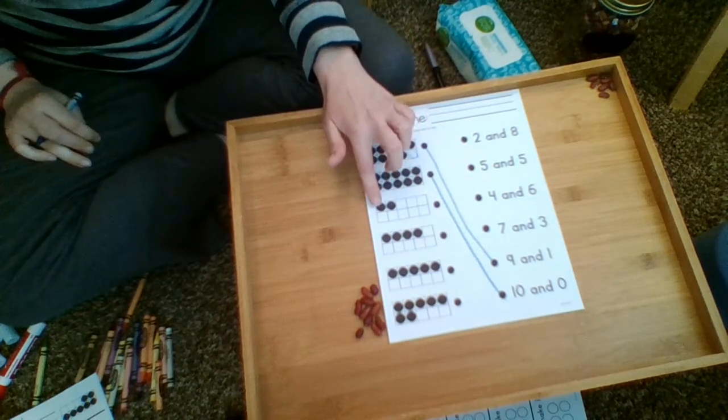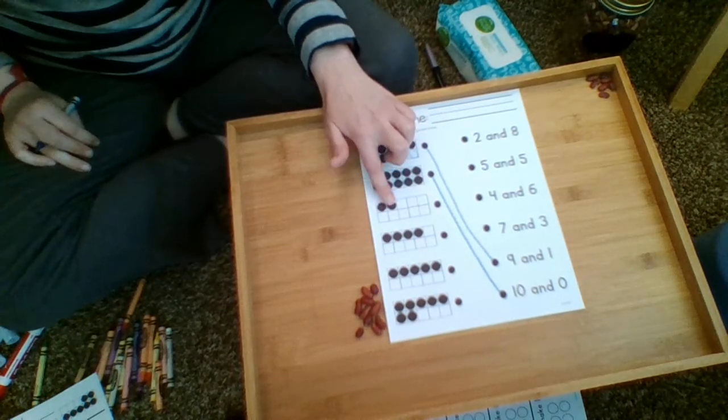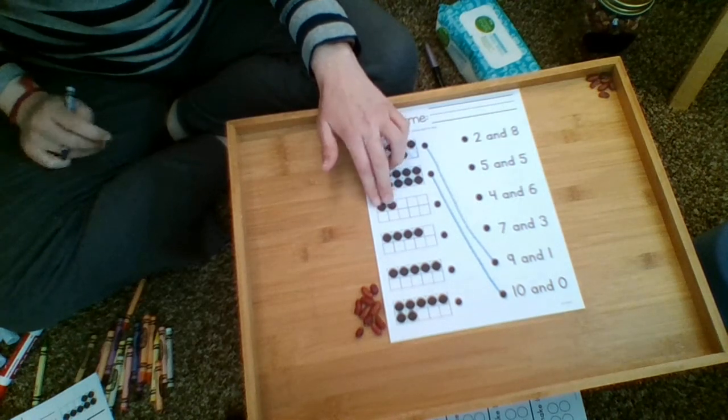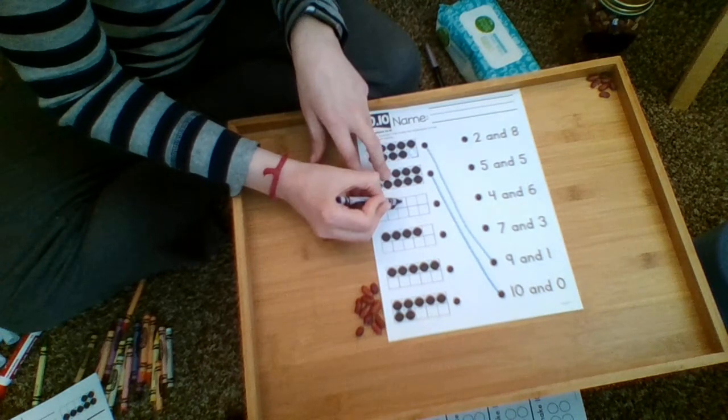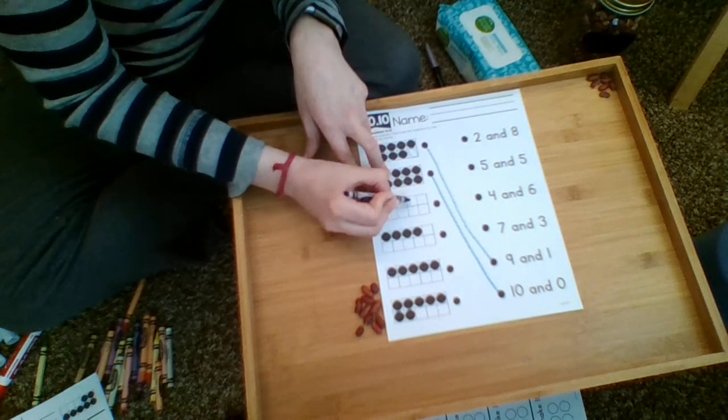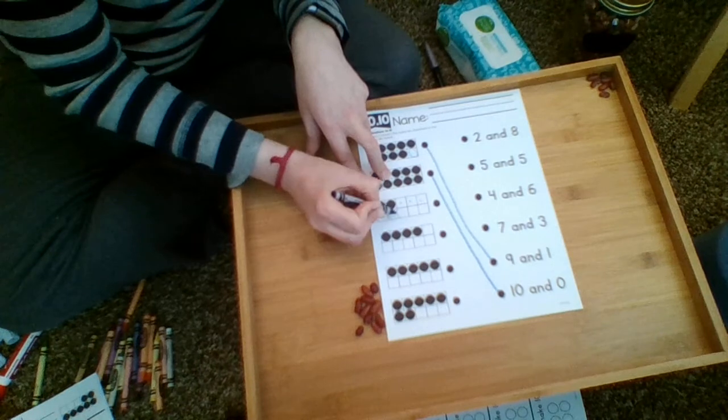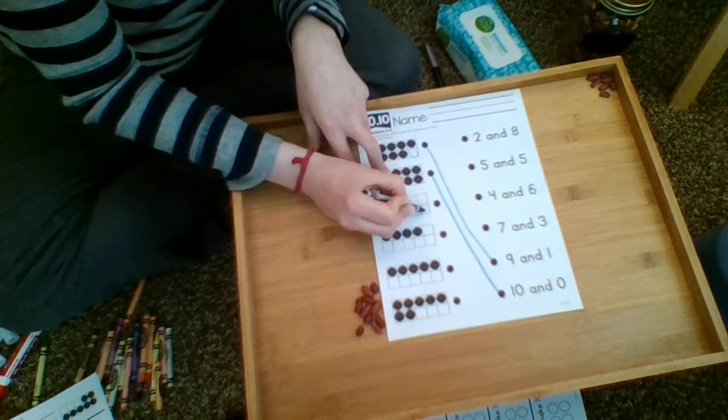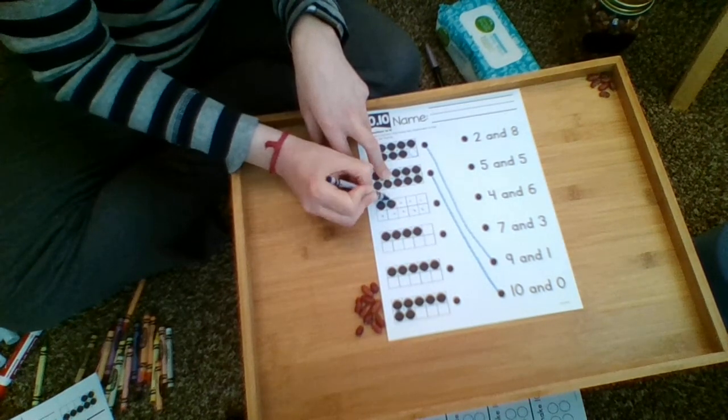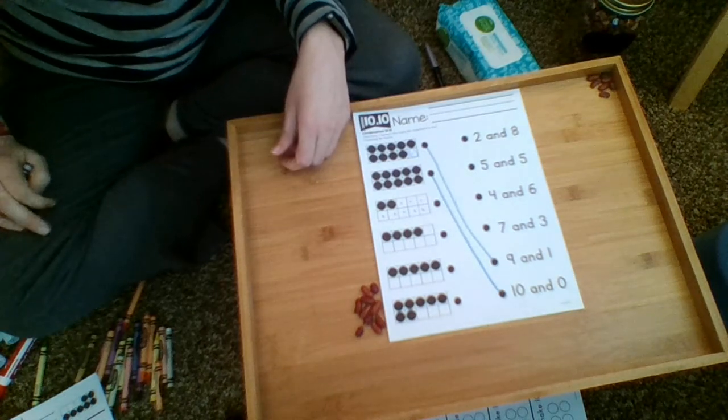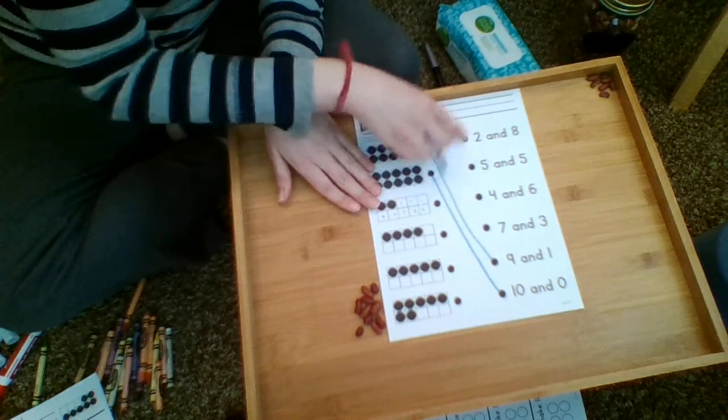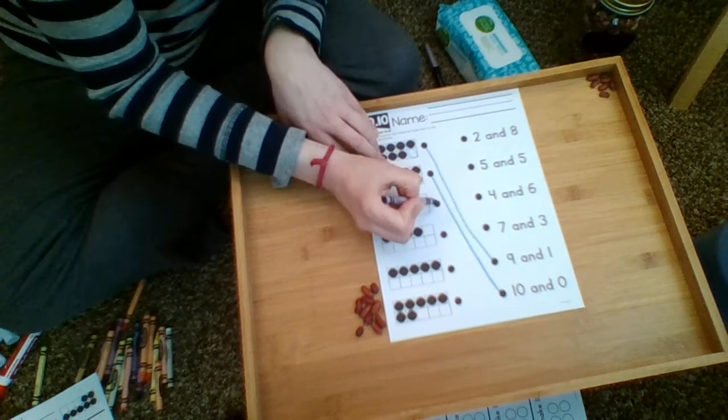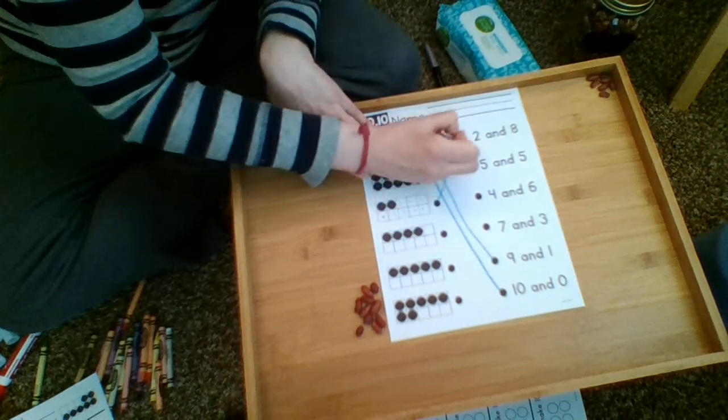For the next one, they gave me two dots. I need to figure out how many dots to put with it to make ten. I'm going to start counting: one, two, three, four, five, six, seven, eight. I need two and eight to make ten. So I'm going to find the one that says two and eight and draw my line to match them.